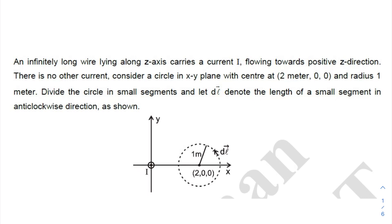In this question, an infinitely long wire lies along the z-axis carrying a current i flowing towards the positive z direction. There is no other current.